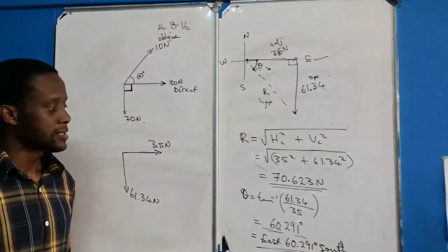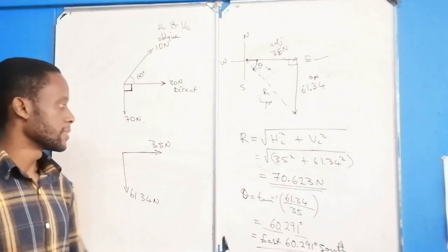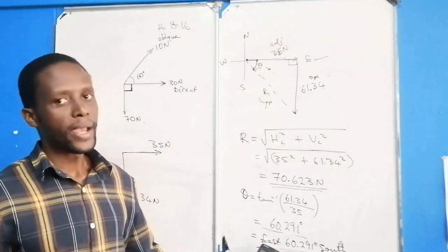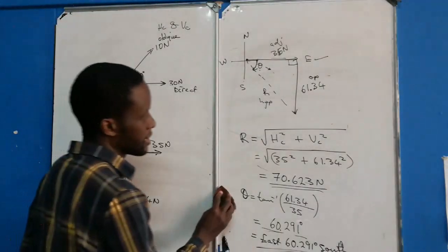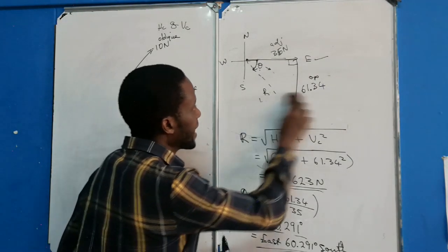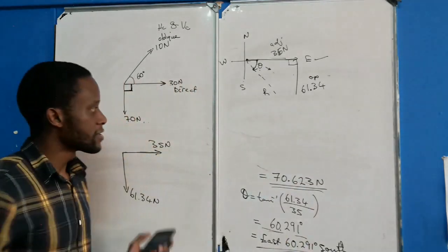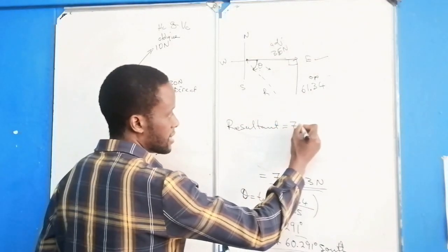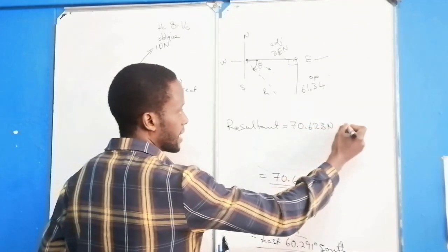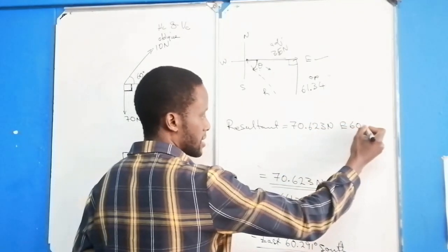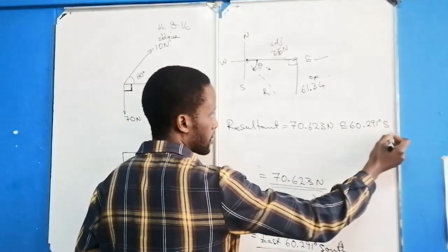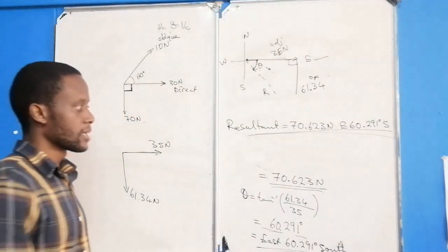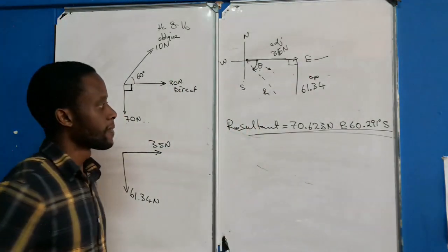This angle means the direction is east, 60.291 degrees towards the south. So our final answer for the resultant is: 70.623 newtons, east 60.291 degrees towards the south. This completes the first part of the question and earns the full six marks after working through all the steps.